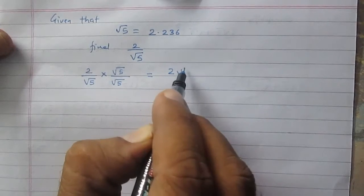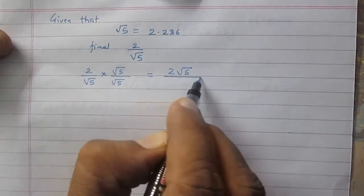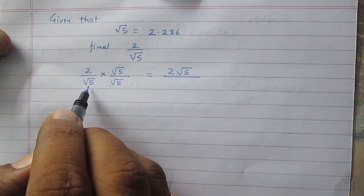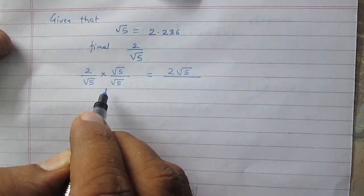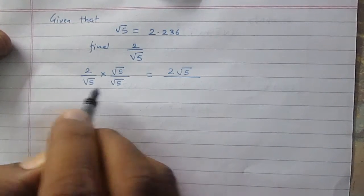So the numerator will become twice of square root of 5, and the denominator is multiplication of square root of 5 with itself, square root of 5. So it is 5.